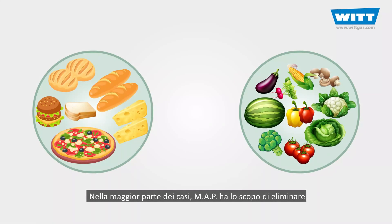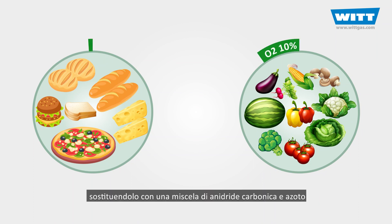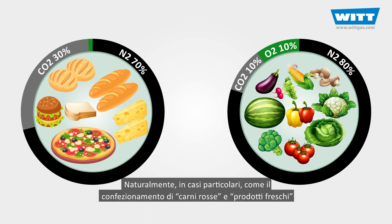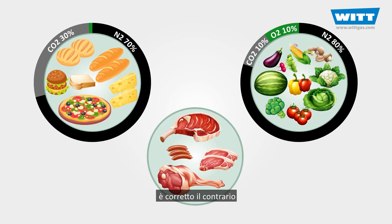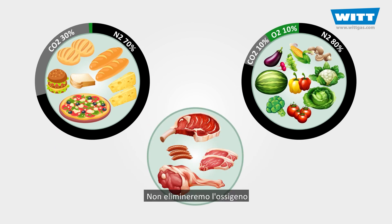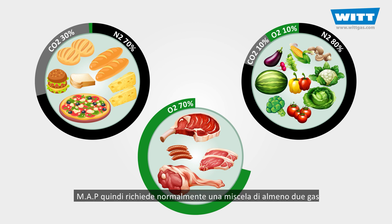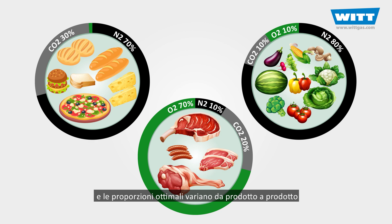In most cases, MAP is aimed at eliminating or reducing oxygen inside the packaging and replacing it with a mixture of carbon dioxide and nitrogen. Of course, in special cases such as packing red meat and fresh produce, the opposite is correct — we do not eliminate the oxygen but instead increase its concentration to prevent anaerobic growth. MAP therefore normally requires a mixture of at least two gases, and the optimum proportions vary from product to product.